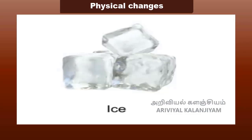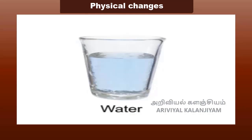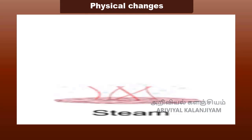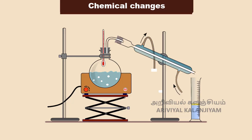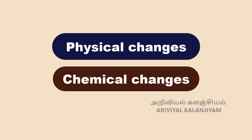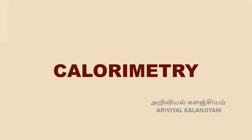Calorimetry: When heat energy is supplied to substances, physical changes take place in them. Solid form of water, i.e. ice, is changed to liquid form, and liquid form of water is changed to gaseous form. These are all physical changes due to heat energy. Similarly, heat energy produces chemical changes also. To know more about the physical and chemical changes that take place in substances, we need to measure the amount of heat involved. The technique used to measure the amount of heat involved in a physical or chemical process is known as calorimetry.